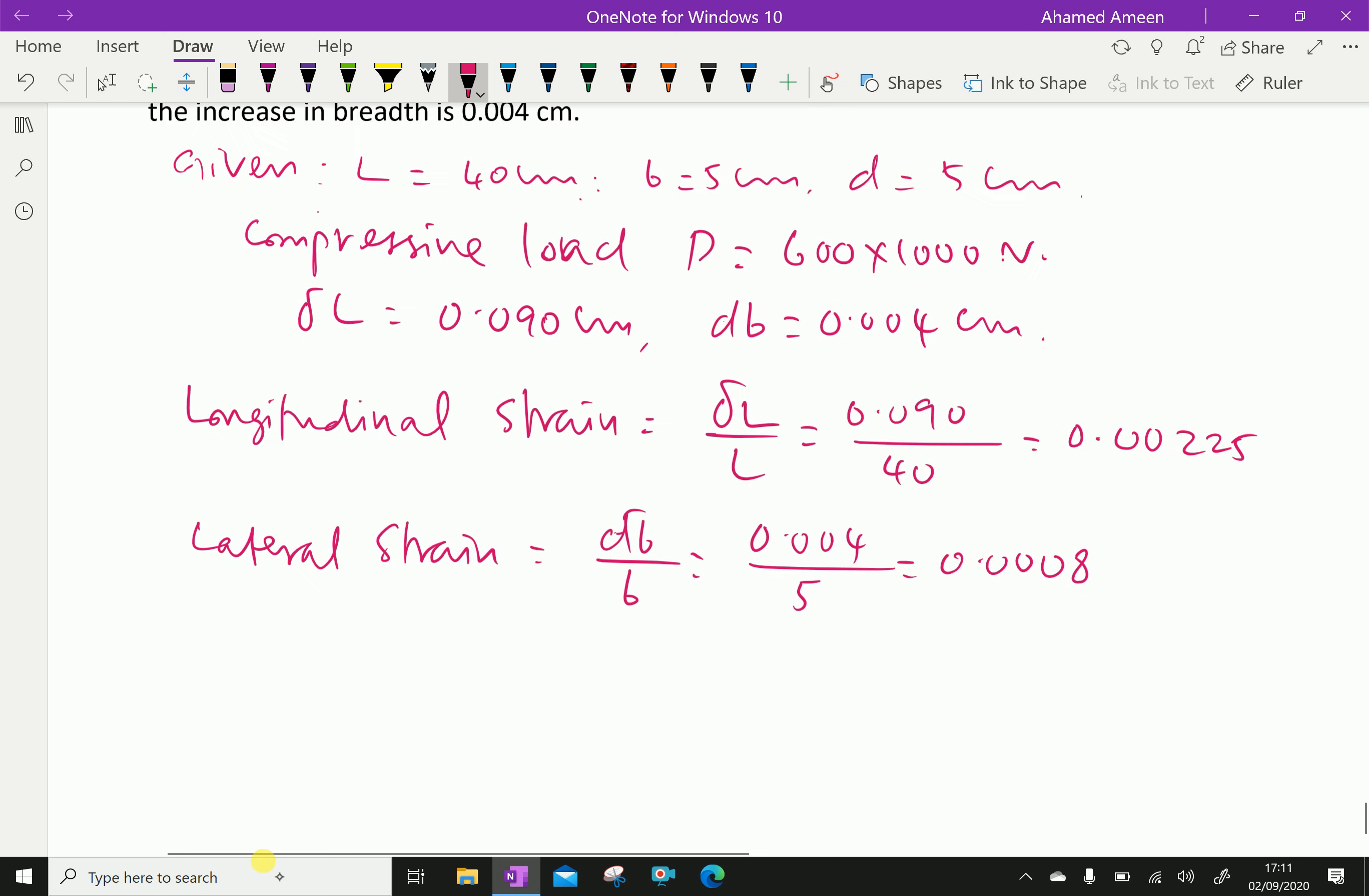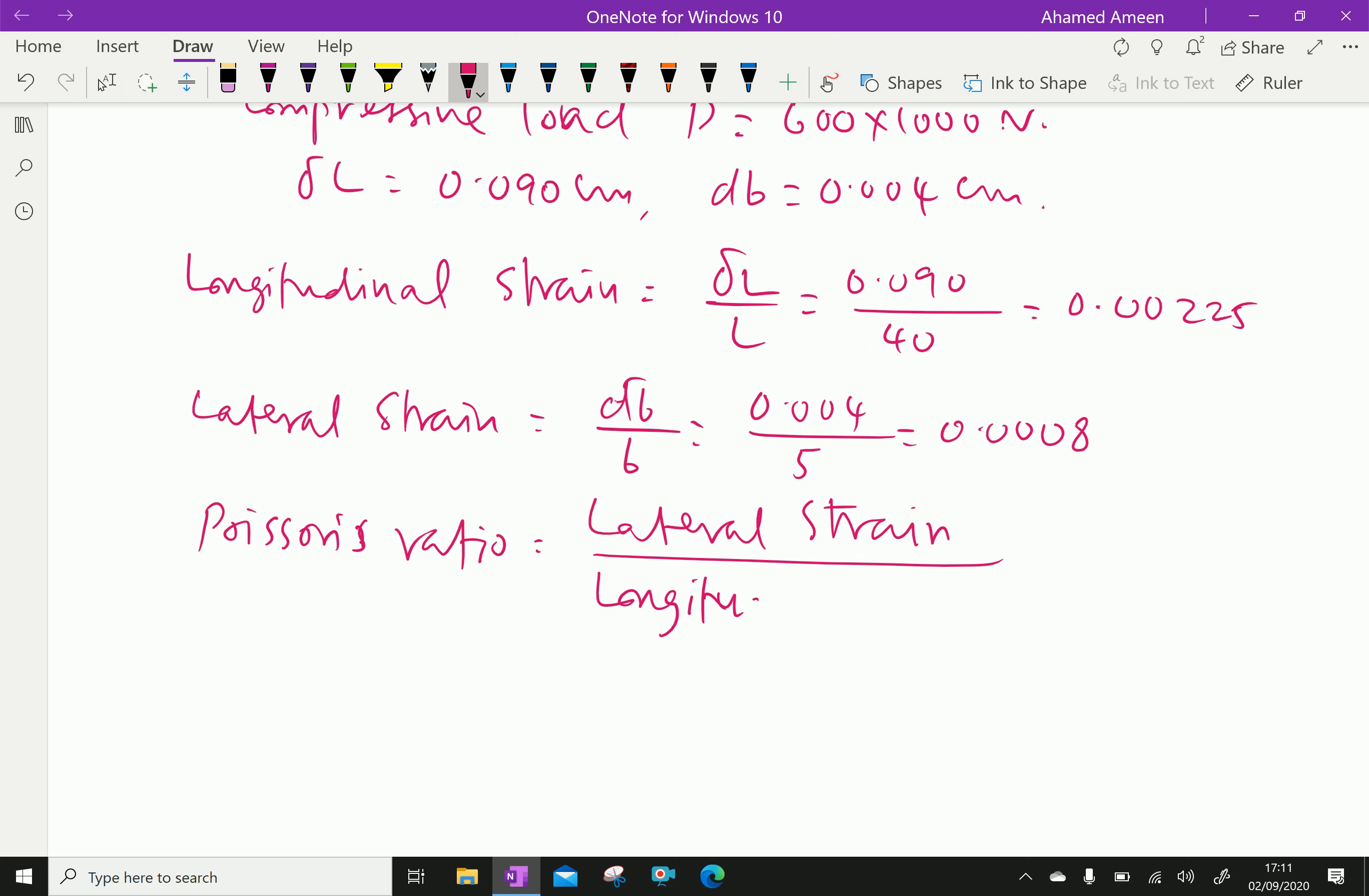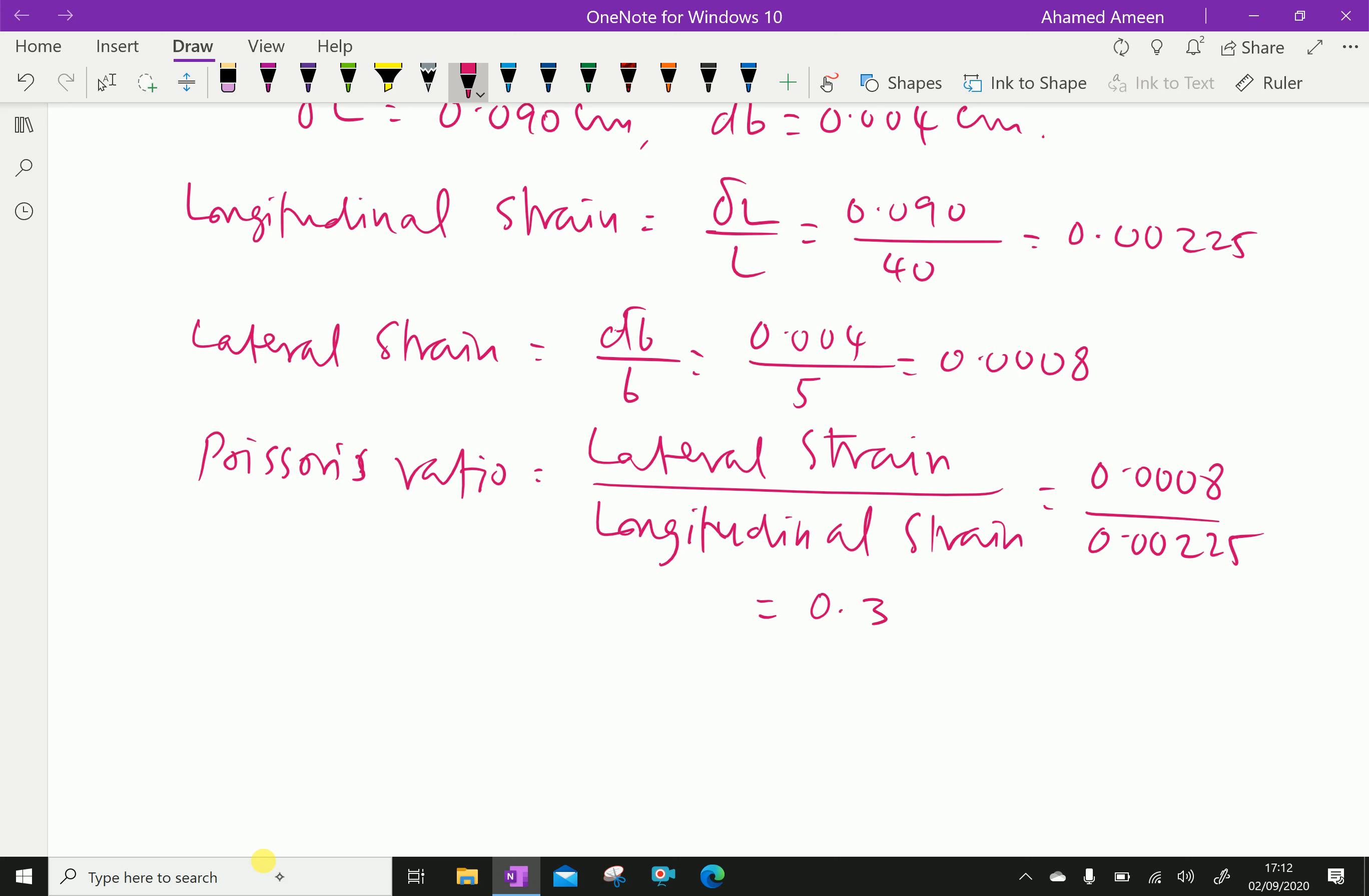Poisson's ratio is lateral strain over longitudinal strain. Here lateral strain is 0.0008 over 0.00225, which equals 0.355.